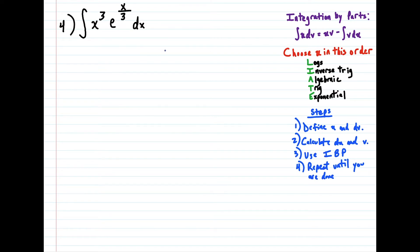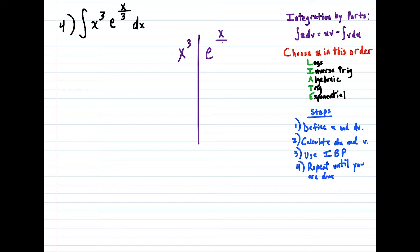So what we do is our u term is going to be x to the third power. But what's going to be different is we can make kind of a little table here. So we're going to have x to the third power in the first row, because this is our u term. And then we're going to have e to the x over 3 in our next row. And then in the third column — what you do is take the derivative all the way down until there's nothing left.